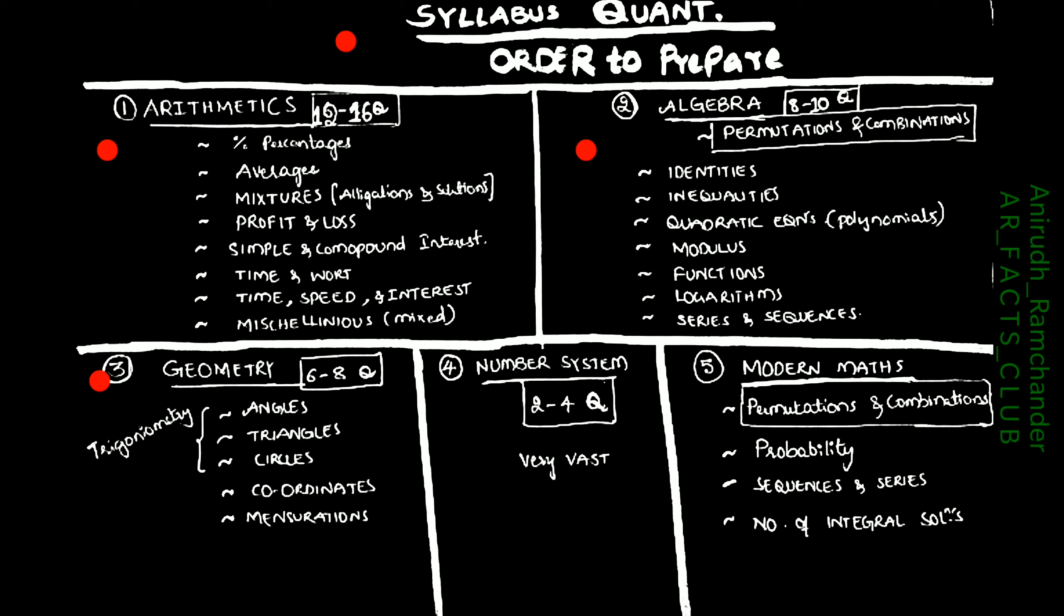Next, you have to come to Geometry. In Geometry, you will be covering 6 to 8 questions: angles, triangles, circles. These three constitute trigonometry and coordinates, and mensuration. Next is the number system. Number system has 2 to 4 questions and is very vast syllabus, so you need to cover it last.